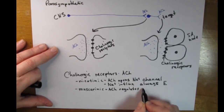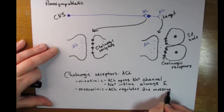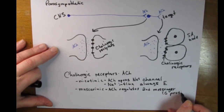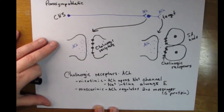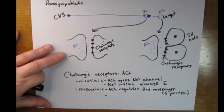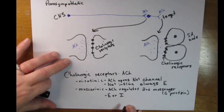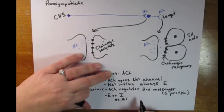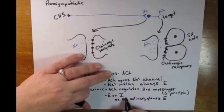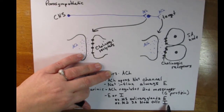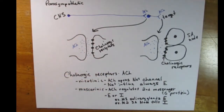The next type of cholinergic receptor is a muscarinic receptor. Acetylcholine does not interact directly with the channel, but instead regulates a G-protein or second messenger system. This could be excitatory or inhibitory depending on what the second messenger system does. For example, M1 muscarinic type 1 receptors are found in the salivary glands and are excitatory — they cause the release of saliva. M2 muscarinic type 2 receptors are found in the SA node and are inhibitory — they actually slow down the activity of those cells.